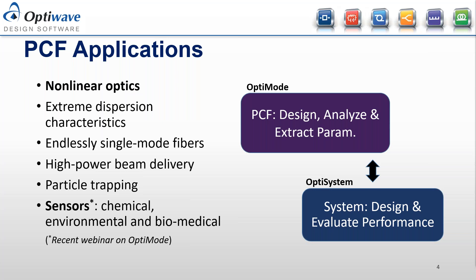The parameters can include the propagation constants, attenuations, effective area, or even the fields. In today's webinar, as we've discussed, we're going to be looking at how these parameters can be used within the OptiSystem product.